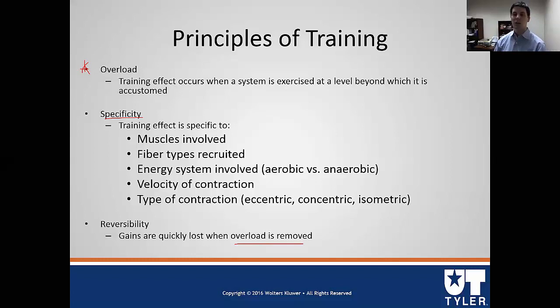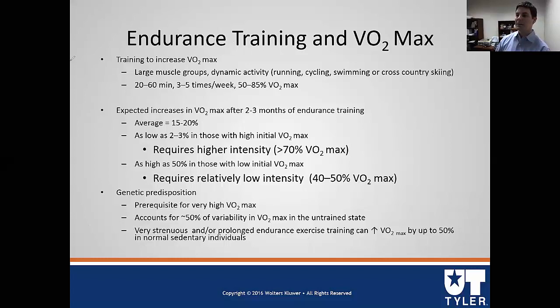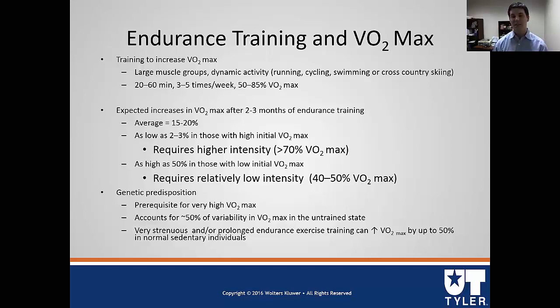Moving into endurance training: there are many programs for increasing endurance or VO2 max, but in general, using large muscle groups with dynamic activities such as running, cycling, or swimming will produce the best increase in VO2 max. Oxygen consumption happens in contracting skeletal muscle via aerobic metabolism. Therefore, the more muscles used, the more adaptations occur, and the greater the VO2 max.